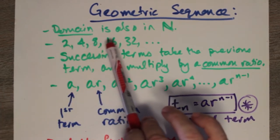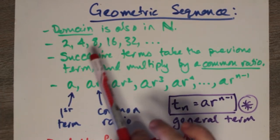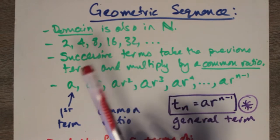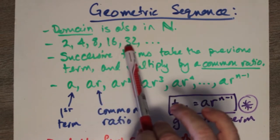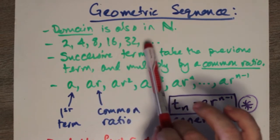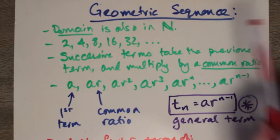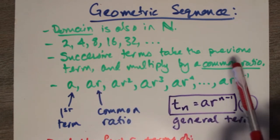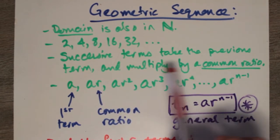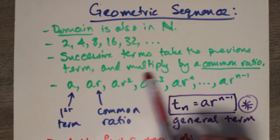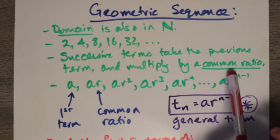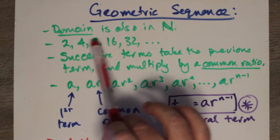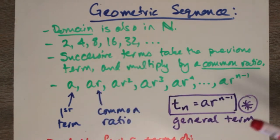So if you multiply by 2 again, you get 16. Multiply by 2 again, you get 32. Multiply by 2 again, you get 64, and you keep going. So successive terms take the previous term and multiply by what we call a common ratio — in this case, the number 2.